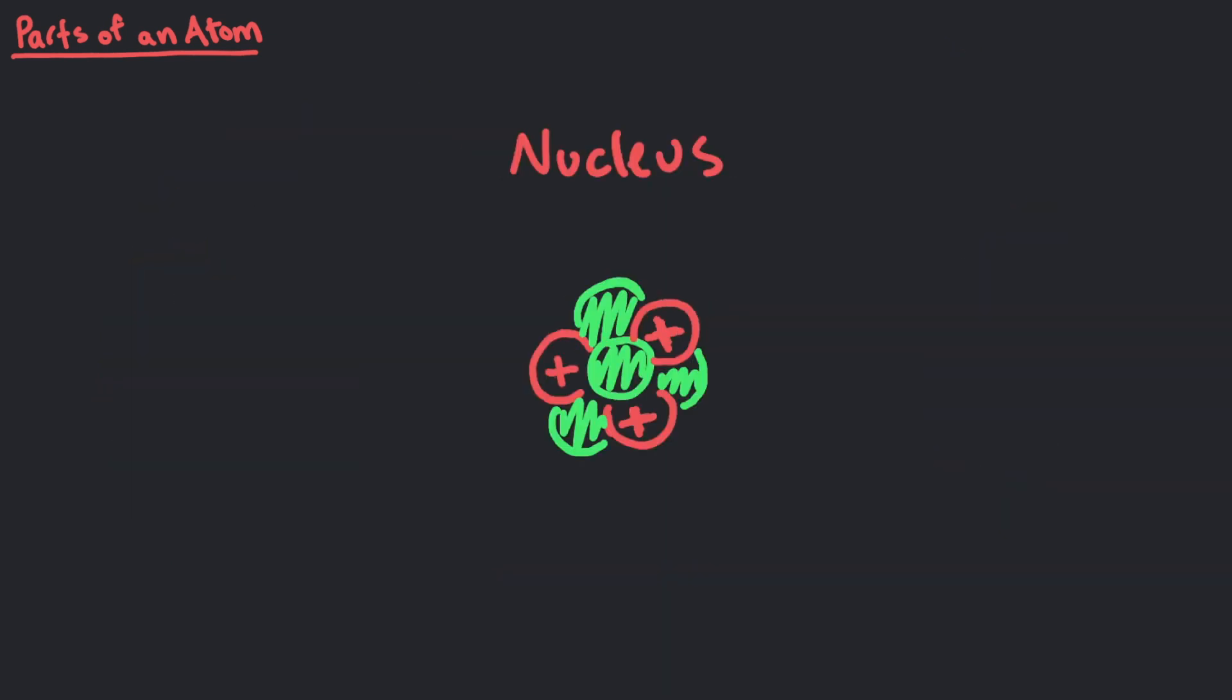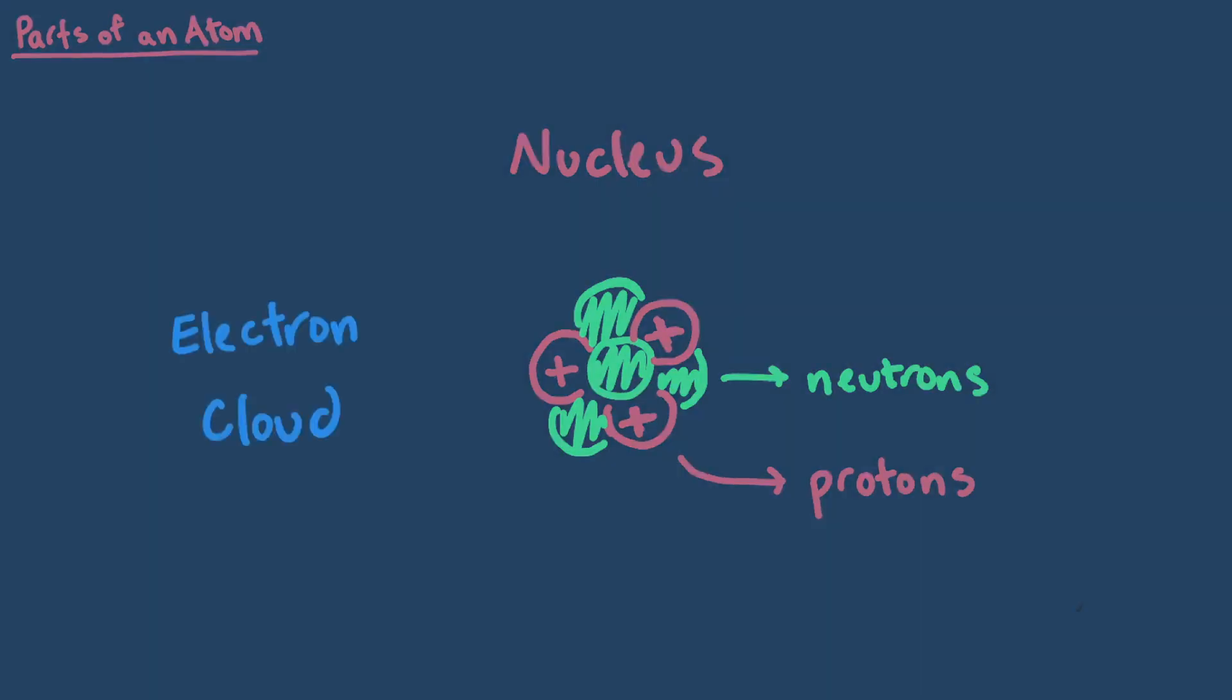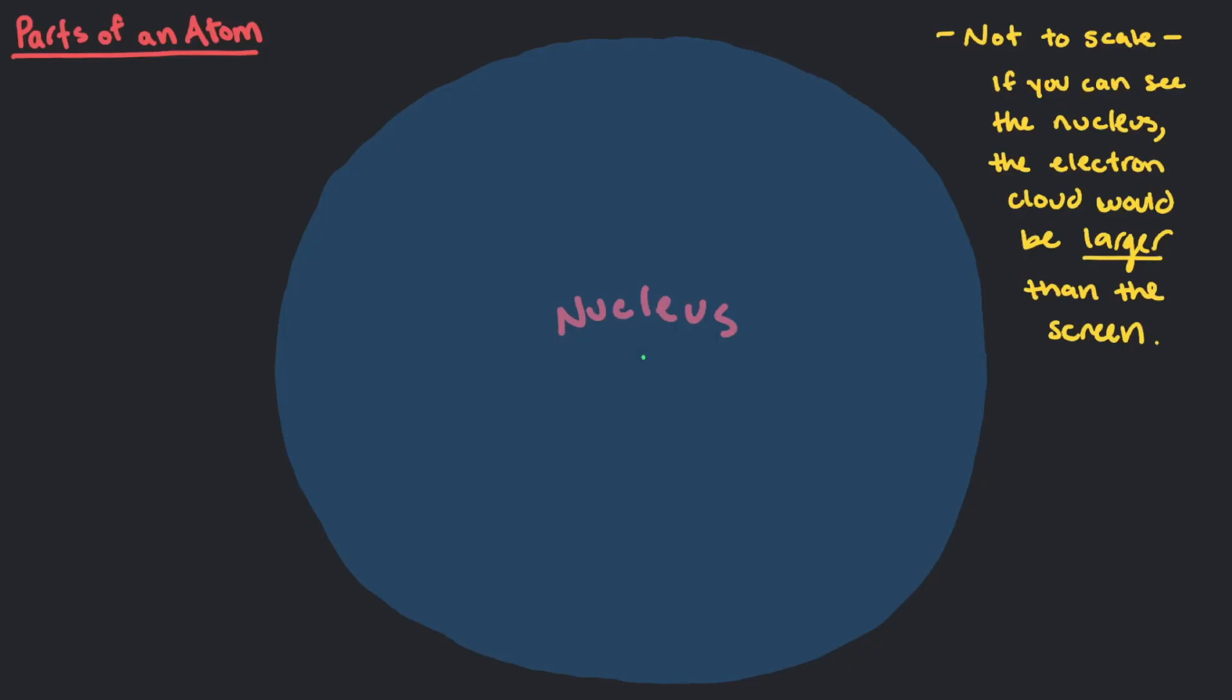The nucleus is made up of protons and neutrons, while the rest of the space around it, the football stadium, is filled with the electron cloud. The nucleus is tiny, like our P.